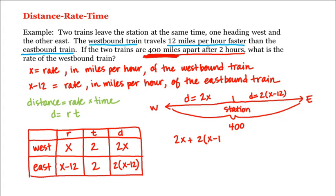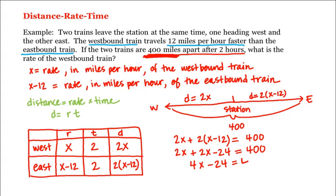So: 2x plus 2 times (x minus 12) equals 400, which gives us 2x plus 2x minus 24 equals 400, or 4x minus 24 equals 400. Adding 24 to both sides gives 4x equals 424, and dividing both sides by 4 gives us x equals 106 miles per hour — that is the rate of the westbound train.